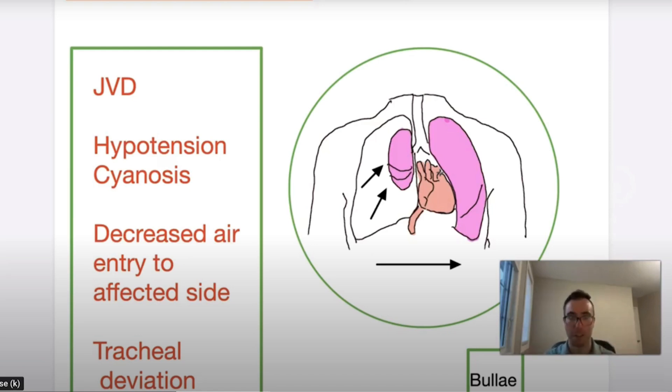It's been historically taught they'll have JVD in a tension pneumothorax. That's not truly a cardinal sign because some subsets of chest trauma patients usually will have maybe a hemopneumothorax as well. If you have significant major trauma, you probably have some other injuries and you're experiencing hemorrhagic shock.